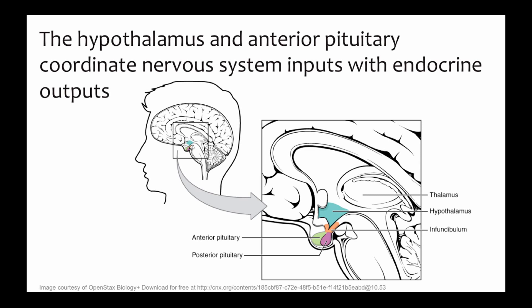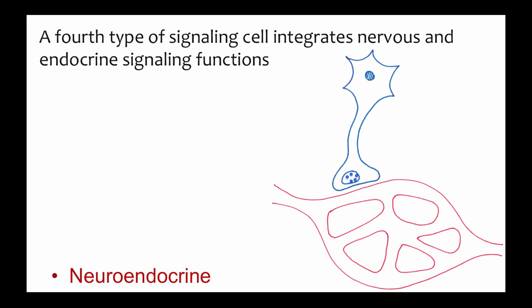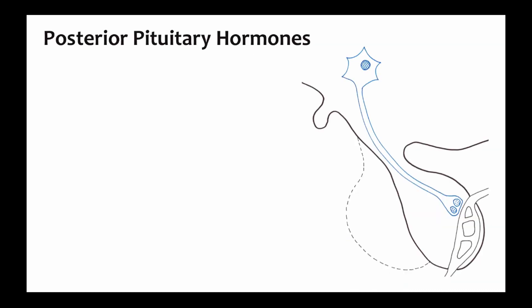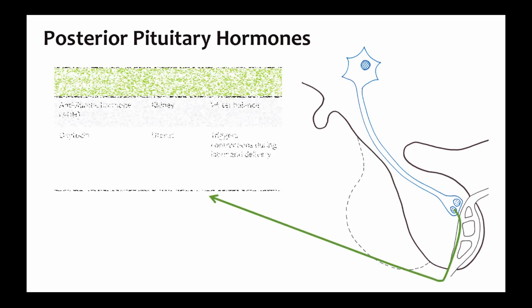The pituitary gland sits right below the hypothalamus. Remember those neuroendocrine cells introduced in the chemical communication video? These cells form action potentials in response to signals from the nervous system, but release hormones into the bloodstream. These cells are found in the hypothalamus. The posterior and anterior pituitary function differently from one another. The posterior pituitary is a sort of way station for hormones produced and released by the neuroendocrine cells of the hypothalamus.